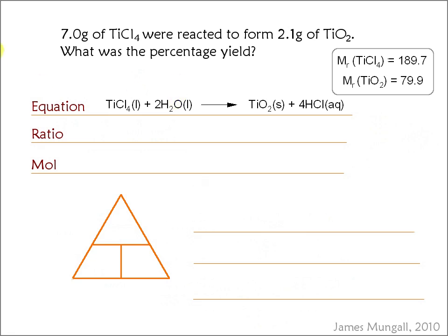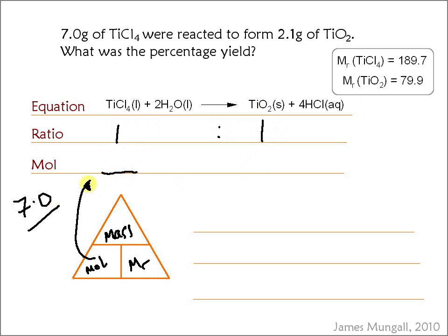Let's do the calculation. The extra information we've been given is the relative formula mass of TiCl4 and TiO2, and the balanced equation. As we can see in the equation, one TiCl4 will react to form one TiO2. To work out the number of moles of TiCl4, we take the mass and divide it by its MR. The mass given in the question is 7.0 and the MR is 189.7, which comes out as 0.0369 moles.